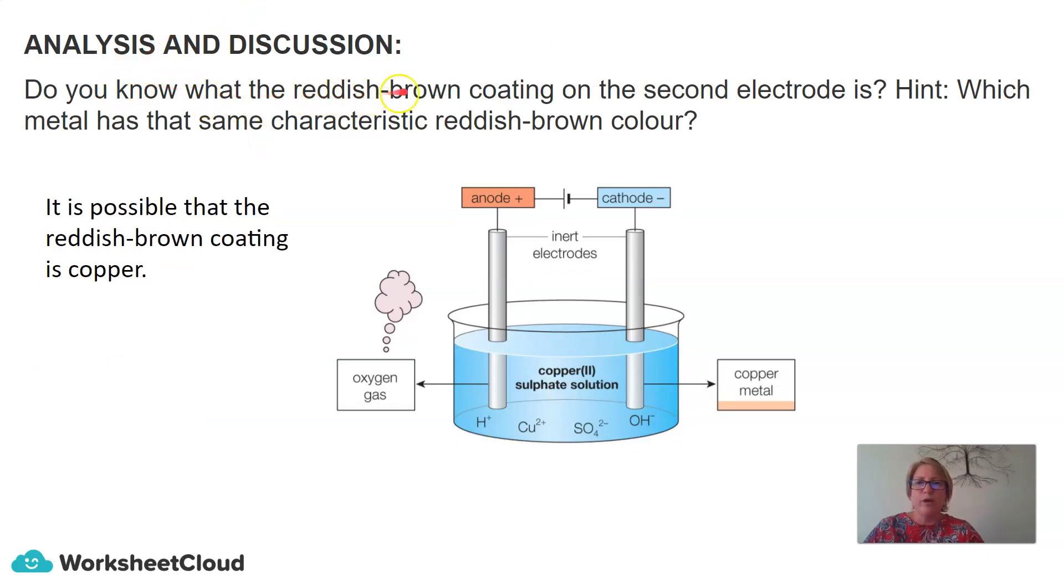So do you know what the reddish brown coating on the second electrode is? So I have a hint for you. Which metal has that same characteristic reddy brown color? So it is possible that the reddish brown coating is copper. And again, we would need to test that.